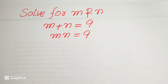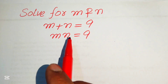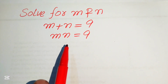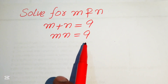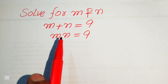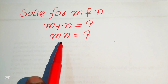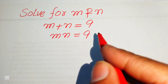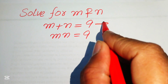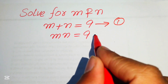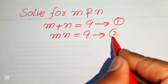Hello everyone, welcome. We have a nice algebra problem to solve. Here we have m plus n equals 9 — we call this equation number 1 — and m times n equals 9 — we call this equation number 2.